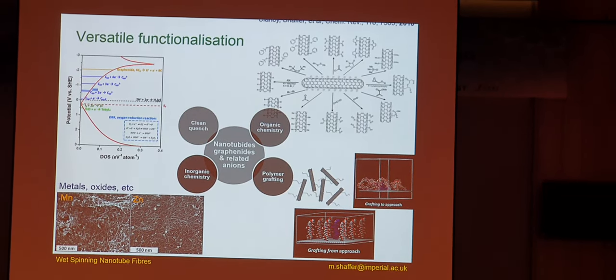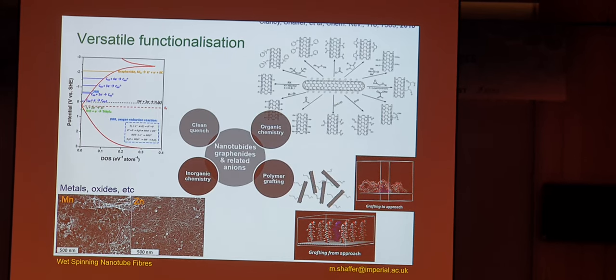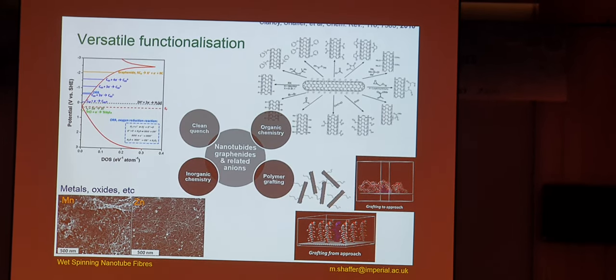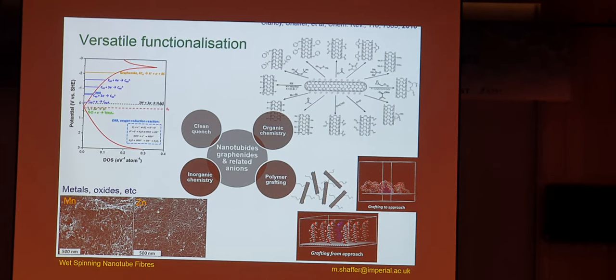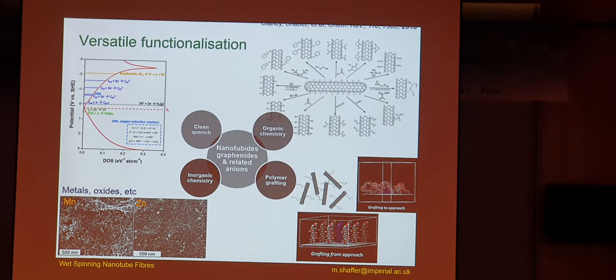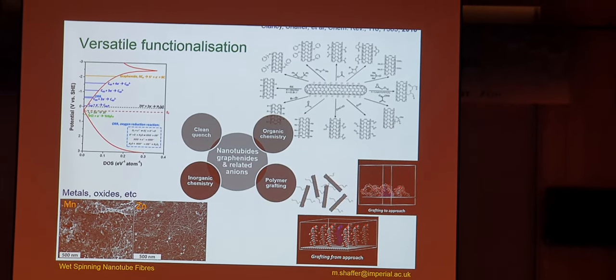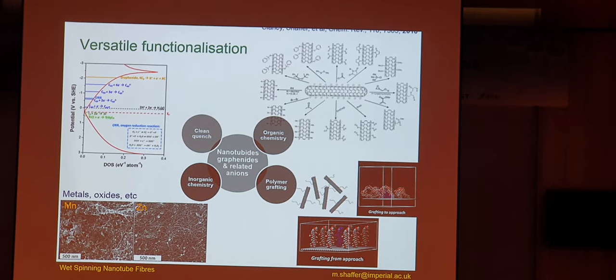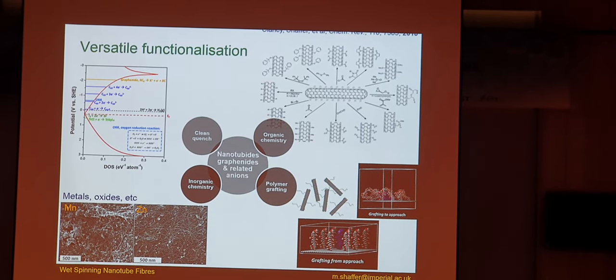I won't talk much about this today, but I will show you examples of grafting polymer on the surface, mainly by reacting with an alkyl halide, which is a kind of metathesis reaction, and you produce an alkali halide salt and you get grafted nanotubes as a product.